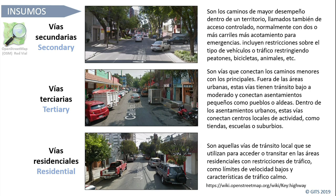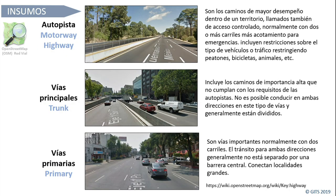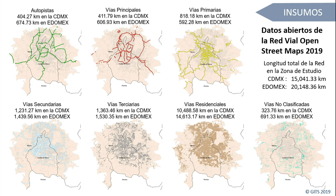Las vías residenciales son aquellas con tránsito local y restricciones como límites de velocidad. También existe un grupo de no clasificadas donde sí pasan vehículos pero son de menor importancia. El resultado de esta reclasificación a partir de los datos de OpenStreetMap muestra las autopistas en color verde, las principales en rojo, las primarias en amarillo —que incluye el sistema de ejes viales—, las secundarias en azul, las residenciales en gris y otras no clasificadas. Este fue un primer esfuerzo para adaptar la clasificación a la ciudad.